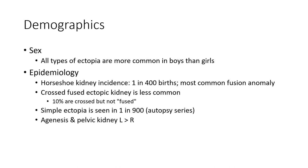Renal agenesis and pelvic kidney occur more commonly on the left than the right.